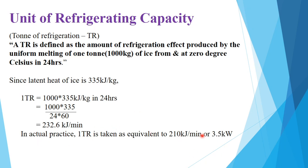In practice, one ton of refrigeration equals 210 kilojoules per minute. For comparison, the theoretical value is 232.6 kilojoules per minute. This is nothing but the unit of refrigerating capacity.